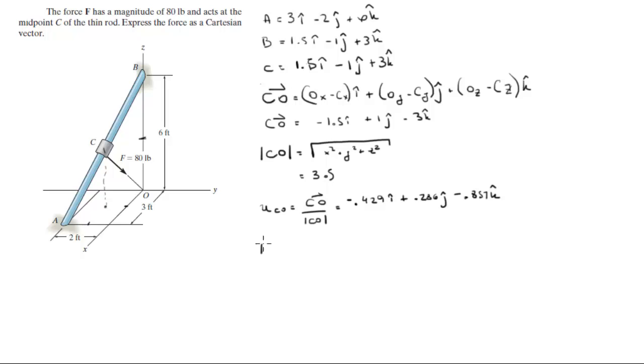Now all you have to do, when you got F that is equal to 80 pounds, if you want to, this is the magnitude F is 80 pounds, to find the vector F you multiply the magnitude by the unit vector.